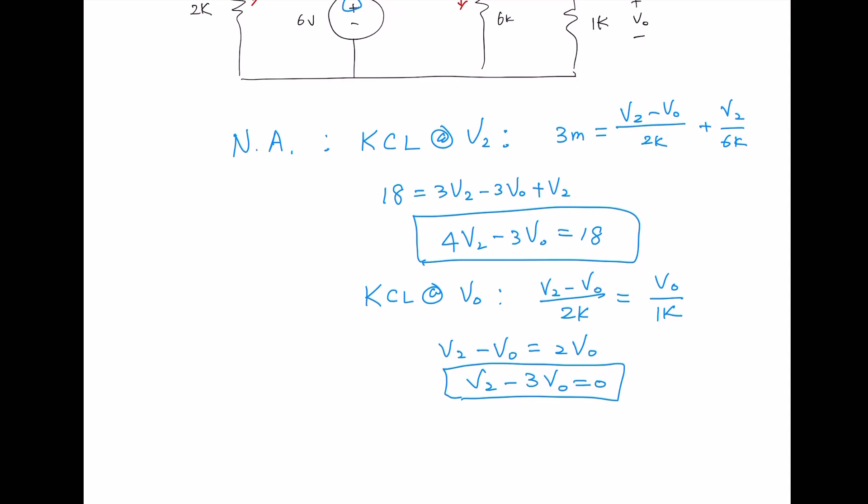If we multiply this guy by 4V2 minus 12V0 and then we need to subtract. Then 4V2 minus 4V2, 0. Negative 3V0 minus minus 12V which is 9V0 equals 18. So that'll give us V0 as 2V.